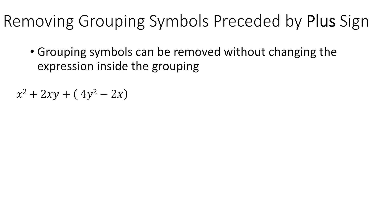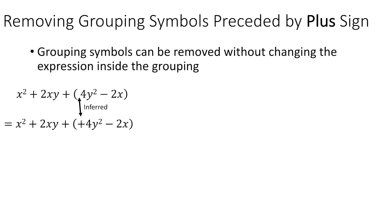Some expressions will have groupings, and with order of operations, anything in brackets needs to be done first. When rearranging algebraically, you may need to remove brackets. With a plus sign in front of the brackets, note that even though 4y squared doesn't show a positive, it's inferred to be positive — if something is negative, you'll definitely need the negative sign. Since what's outside is just a plus one, multiplying through changes nothing: 1 times 4y squared is 4y squared, and 1 times minus 2x is still minus 2x. So you simply remove the brackets.